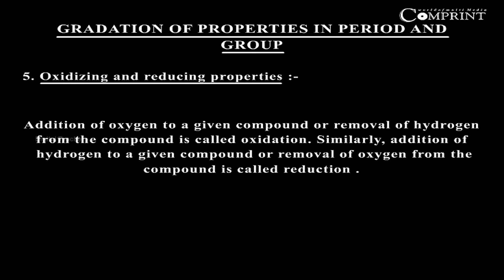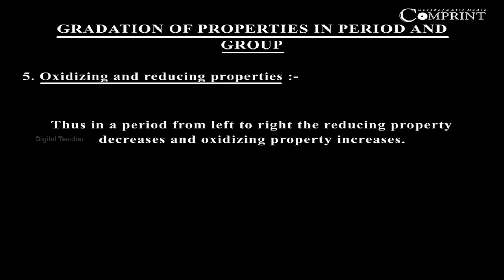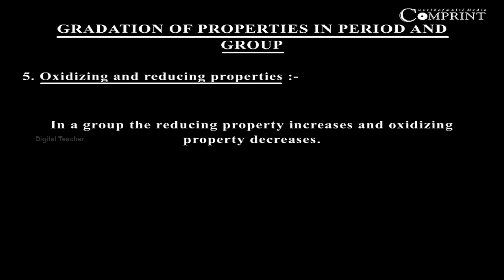Oxidizing and reducing properties: Addition of oxygen to a given compound or removal of hydrogen from the compound is called oxidation. Similarly, addition of hydrogen to a given compound or removal of oxygen from the compound is called reduction. In a period from left to right, reducing property decreases and oxidizing property increases. In a group, the reducing property increases and oxidizing property decreases.